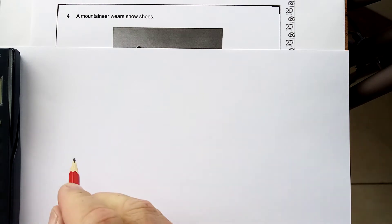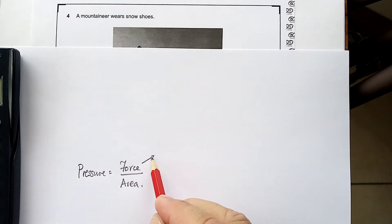So, the definition of pressure is equal to force divided by area. The force divided by the area. That's the pressure. Now, force is always measured in newtons. And remember, weight and force are the same thing.